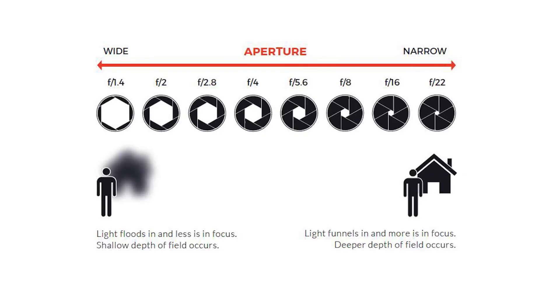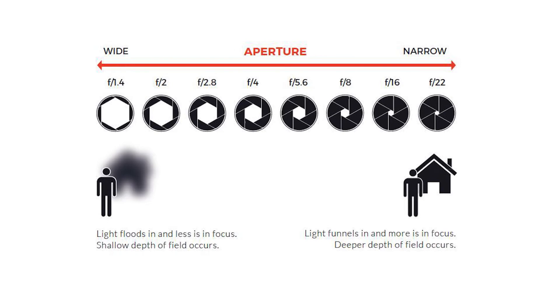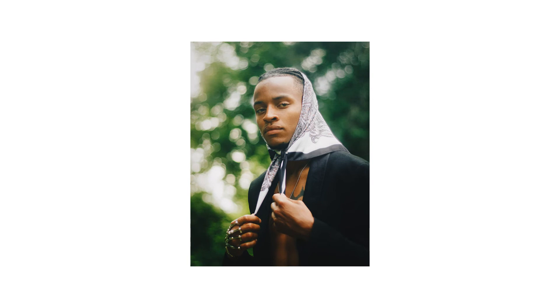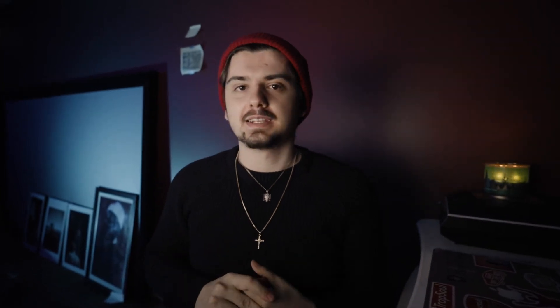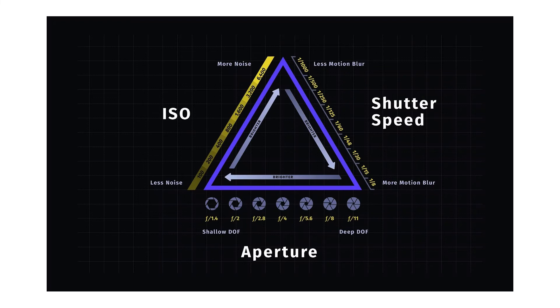Aperture — this is your depth of field. From a numbers standpoint, a lower aperture gives you that shallow depth of field. So in portraiture, if you're using a lower aperture, that's how you get that nice blurry bokeh background. For a higher aperture, more stuff is in focus — this is used for landscapes to get more of the scene sharp. And just like shutter speed with light, a lower aperture allows more light in and a higher aperture lets less light in.